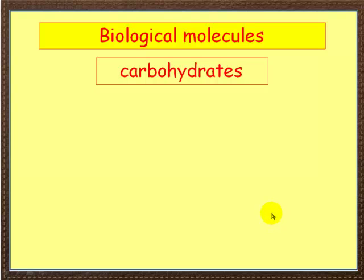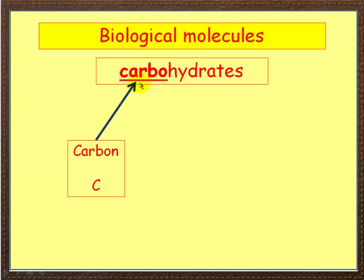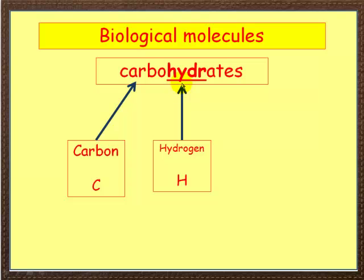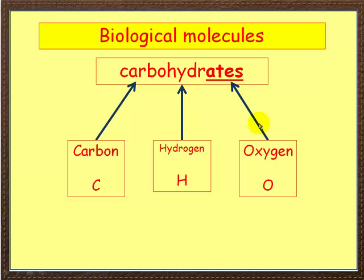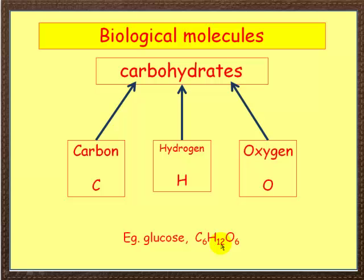First of all, carbohydrates. As the name suggests, let's break this name down. The carbo bit means carbon. The hydro bit here means hydrogen. And ATE — in any biological or chemical molecule, if you see the ending ATE, it means there's oxygen present. So in a carbohydrate we've got carbon, hydrogen and oxygen. An example here is glucose, and that's got 6 carbons, 12 hydrogens and 6 oxygens.